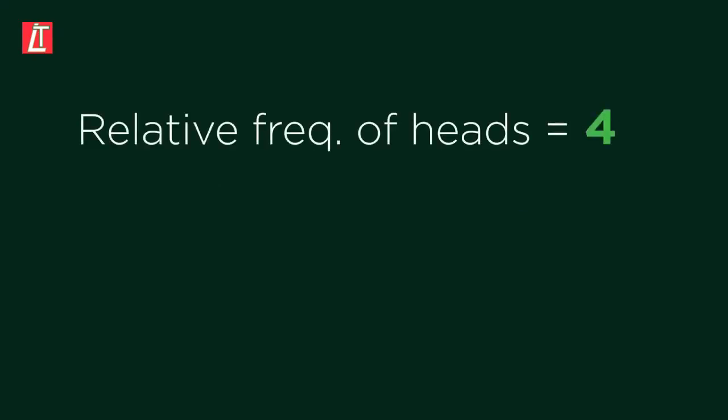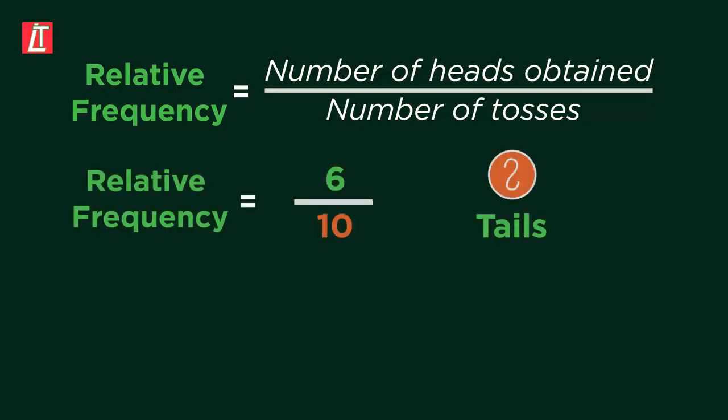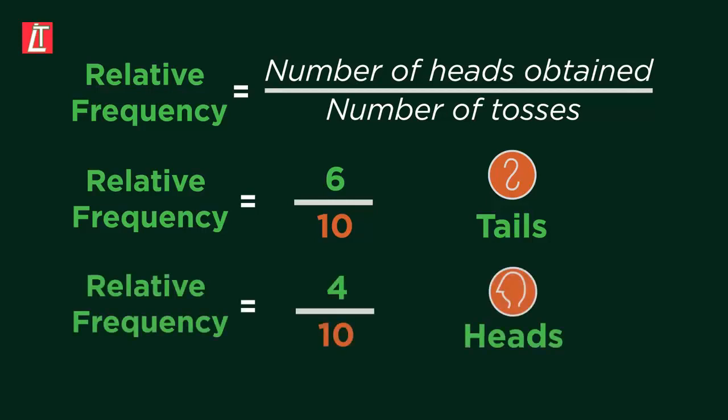Well, the frequency of heads is four, and the frequency of tails is six, so we use the following method to help you calculate. Relative frequency equals the number of heads obtained over the number of tosses. That means the relative frequency of getting tails is six out of ten, and the relative frequency of getting heads is four out of ten.